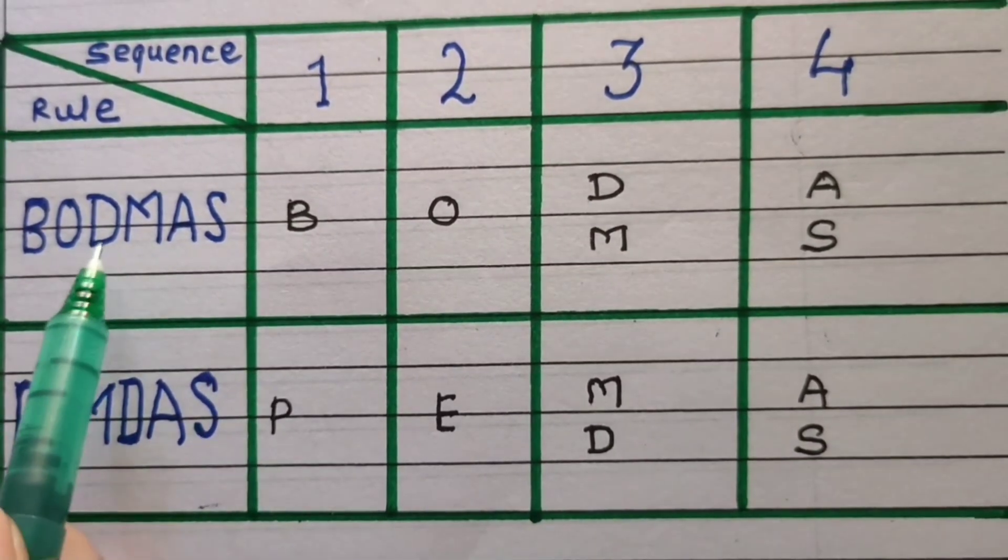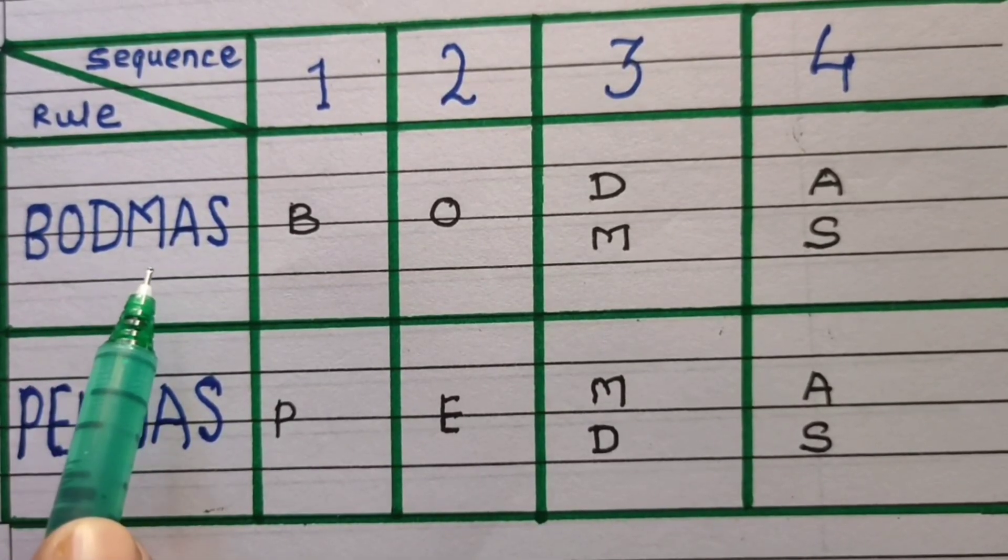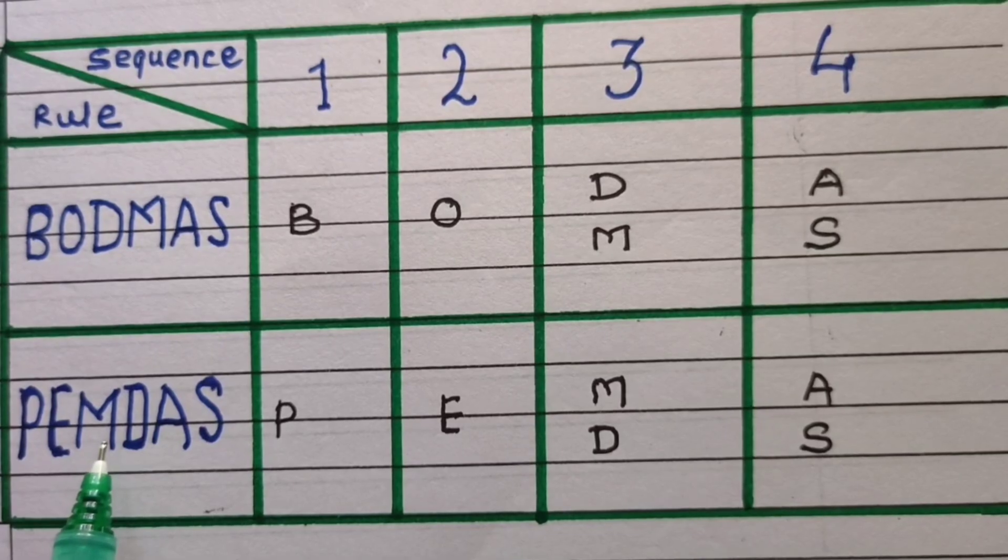This mathematical rule BODMAS is used in India and UK, and PEMDAS is used in the US and France.